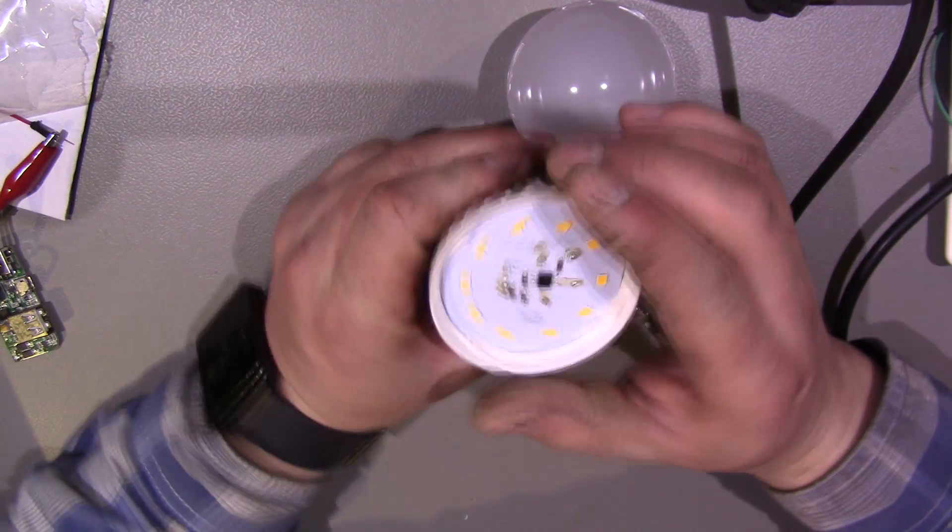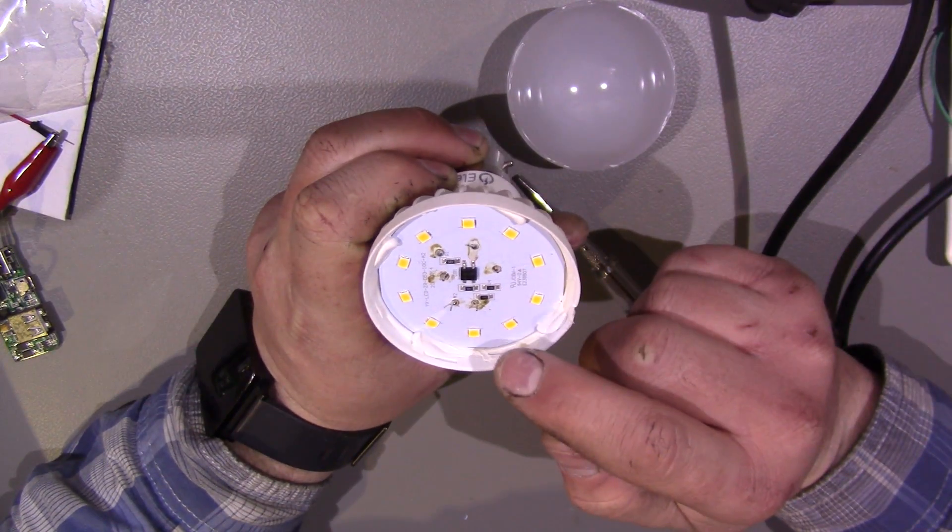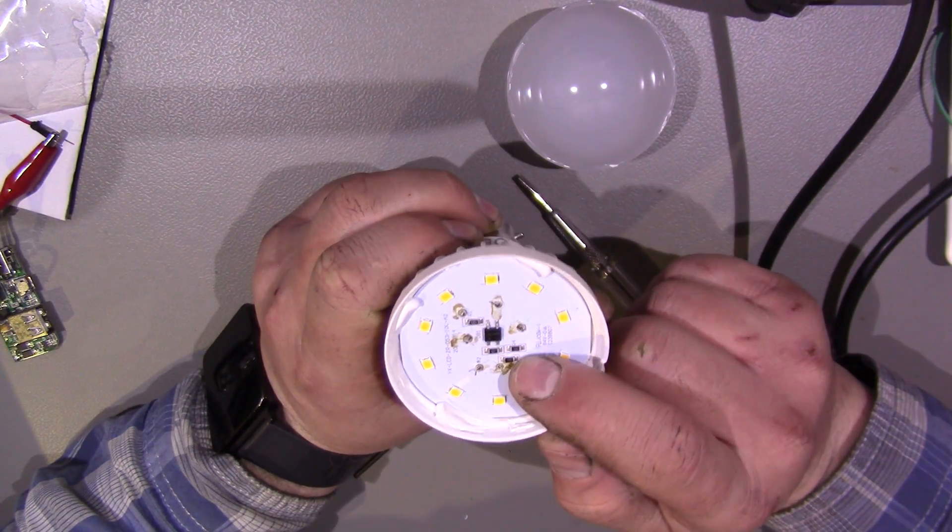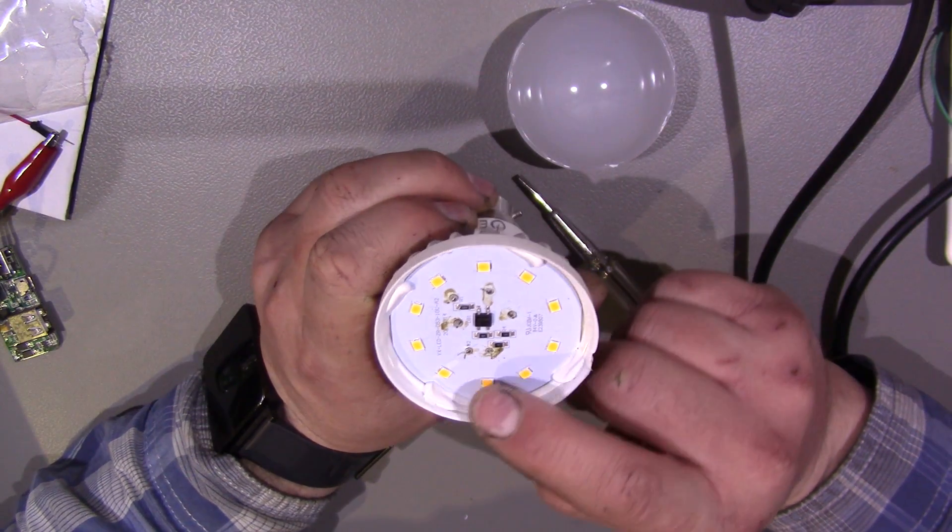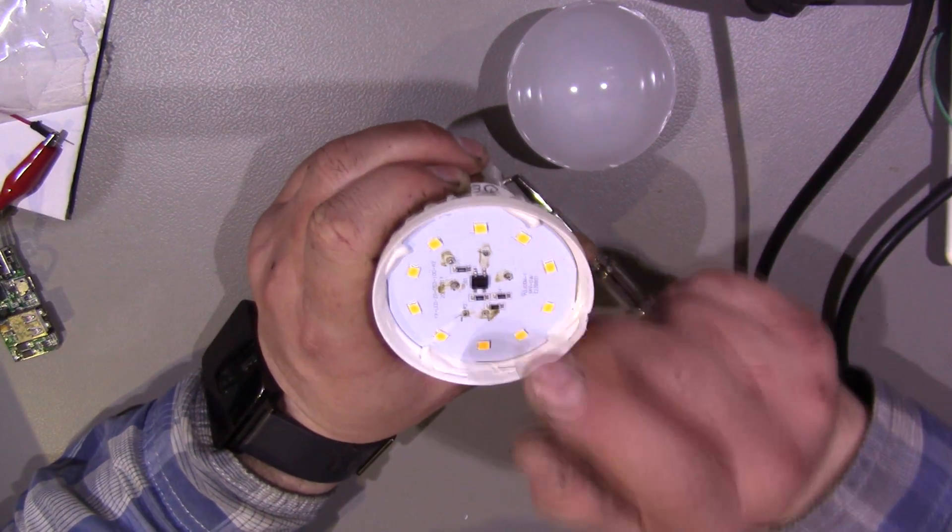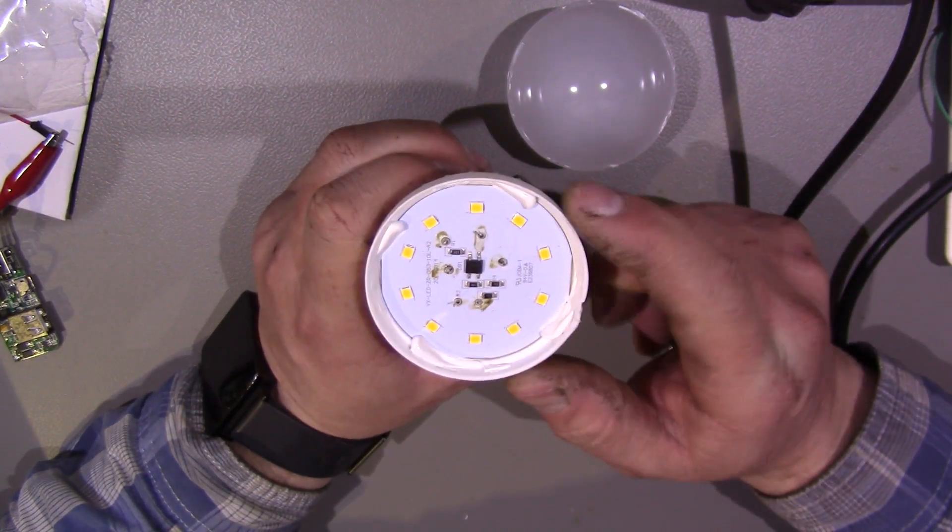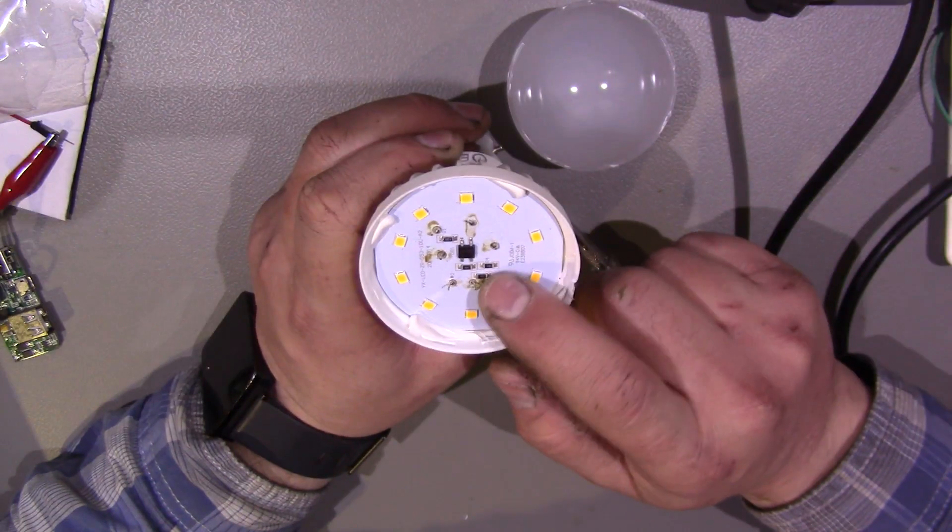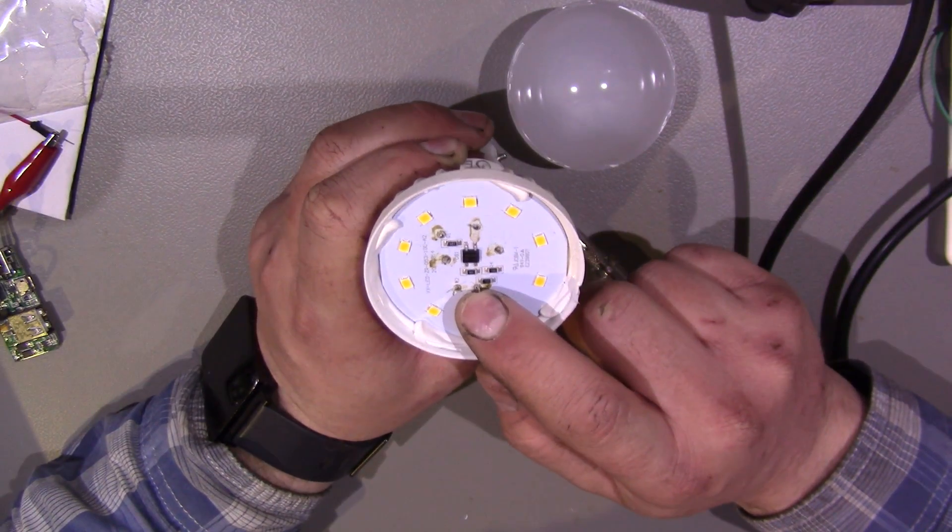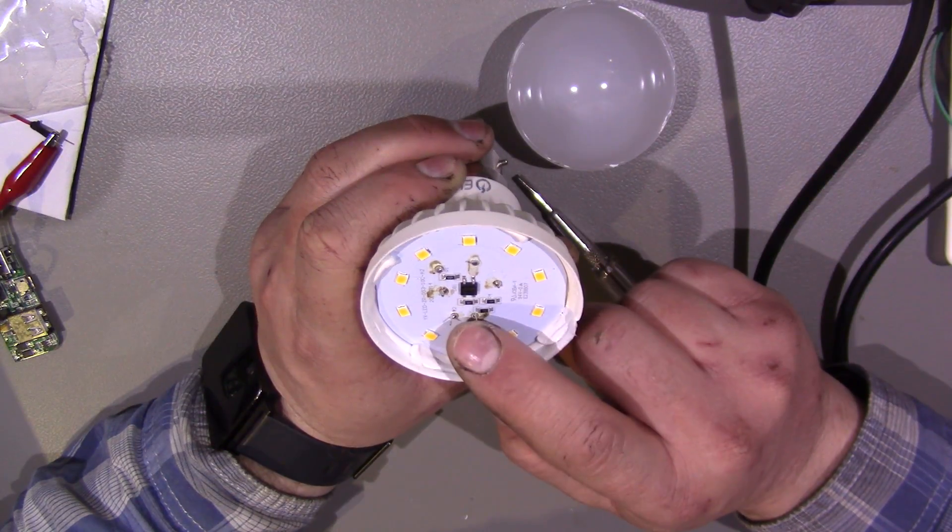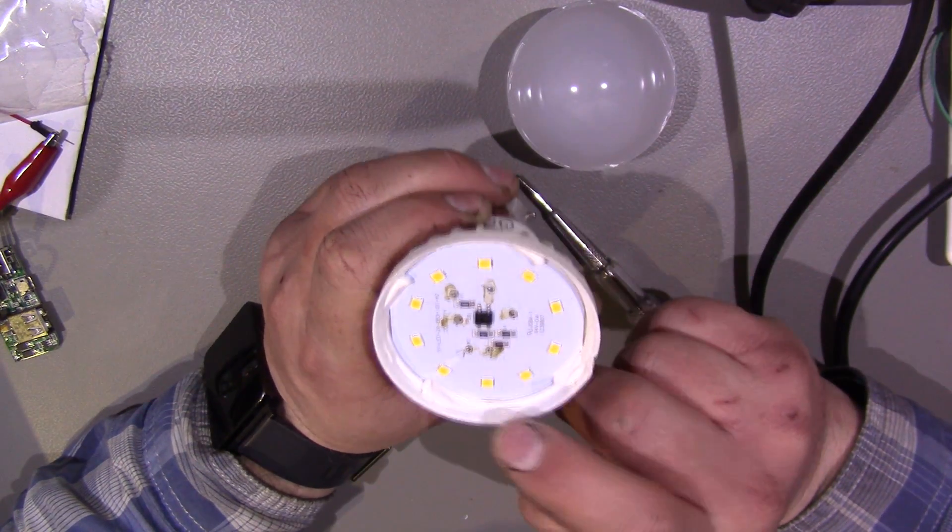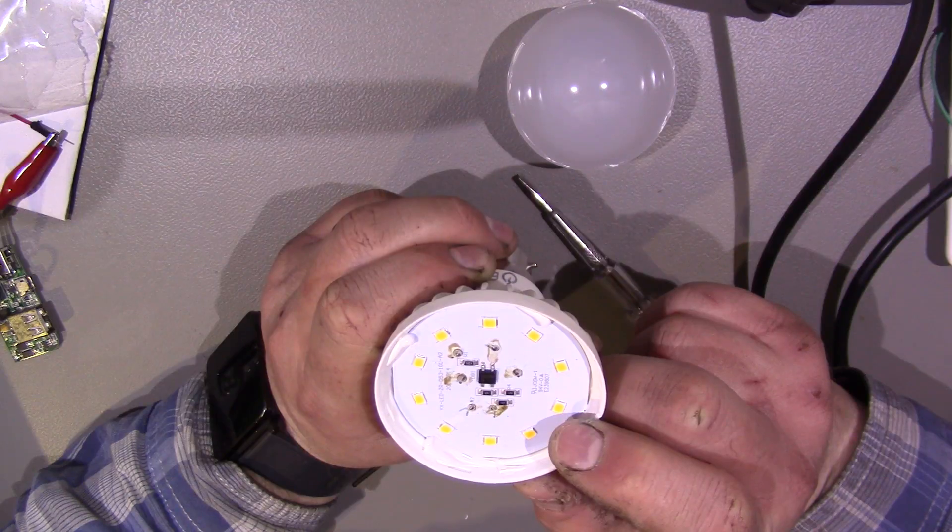We've got a couple resistors. 1 ohm I think. 1.4 ohms. That might be 1K. So I can never remember the right way to read surface mount resistors. Normally I think the end one is the multiplier. I think the first one if it's a 0 you ignore it.